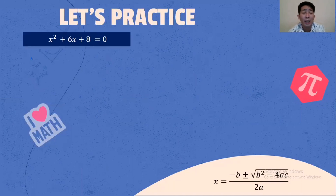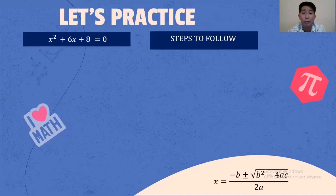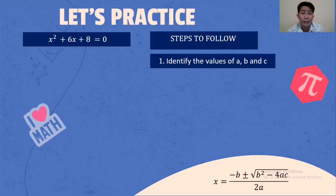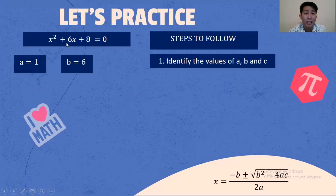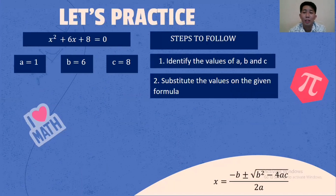Next example: X squared plus 6X plus 8 equals 0. Steps to follow, same as what we did. Identify the values of A, B, and C. Value of A is 1, beside X squared. Value of B is 6, beside X. And the constant C is 8. Then substitute the values on the given formula.